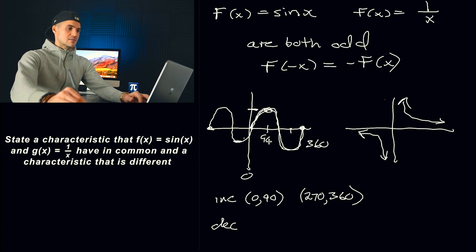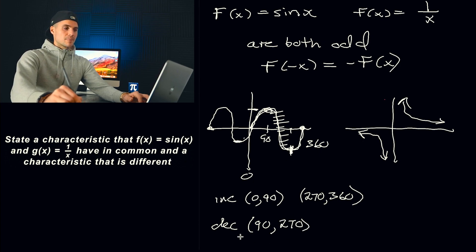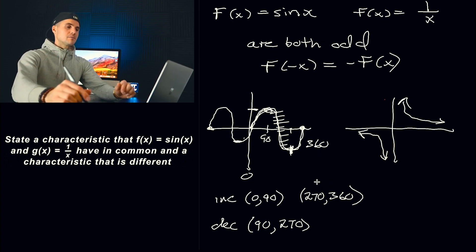And then what's the decreasing intervals here? Well, it's from 90. The function is decreasing. The y is decreasing. So those are the intervals right here. And again, these are going to repeat infinitely, both to the negative and the positive side. But again, I'm just looking at it from 0 to 360 for this example.